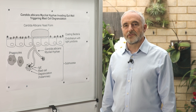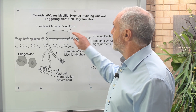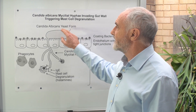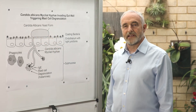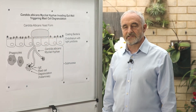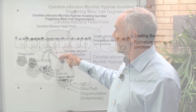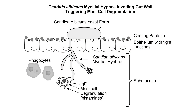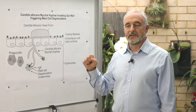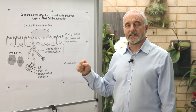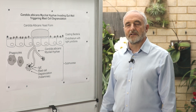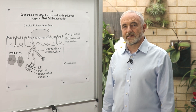Candida has three major forms. It has a yeast form that lives on the surface of the endothelium, which is the inside of our gut. It also has a mycelial form which invades the wall of the gut. And it has a form which is spore-like — if the environment isn't very good, it will form a resistant body that can just sit there, and that makes it hard for us to kill it off.